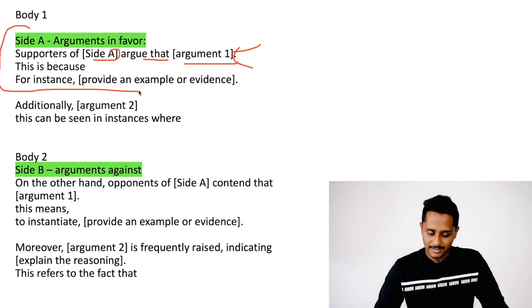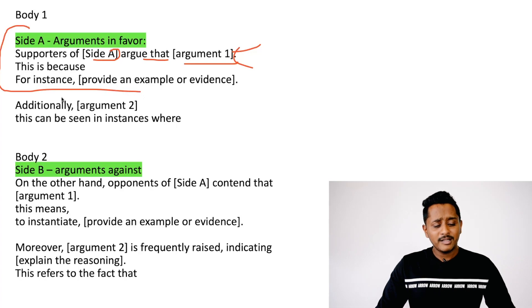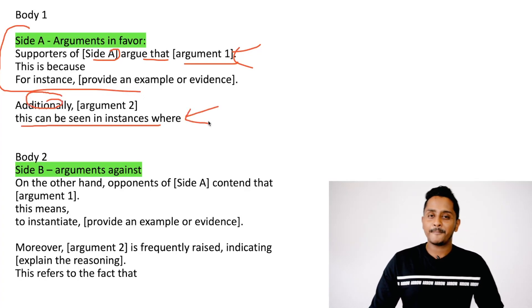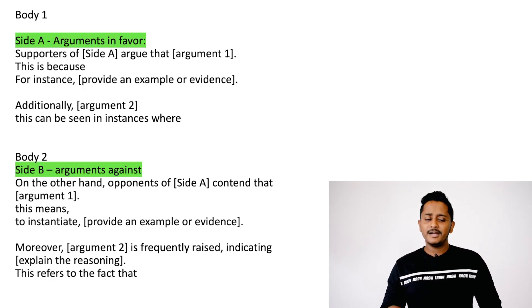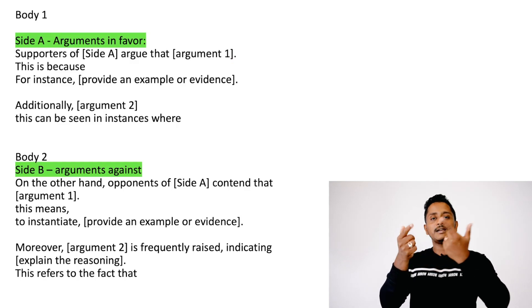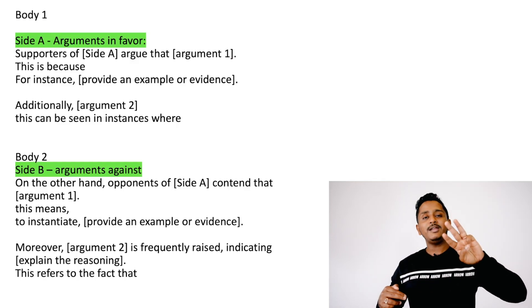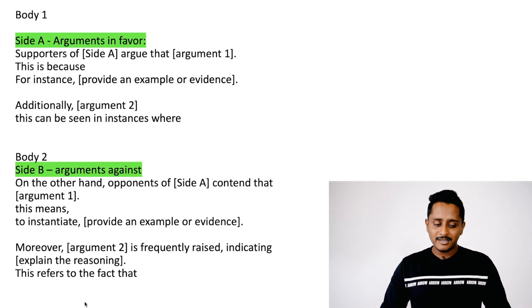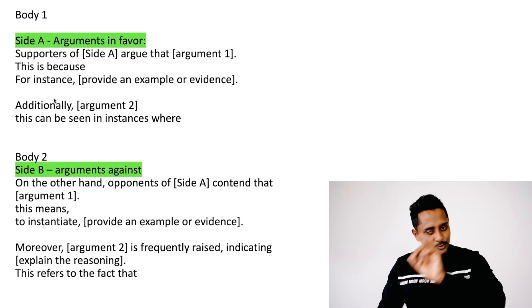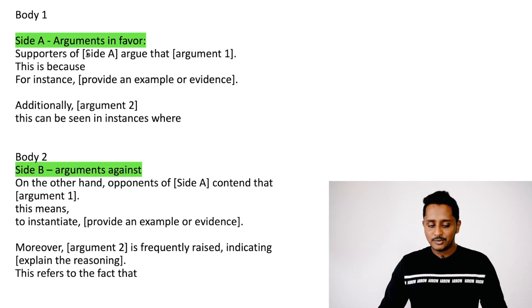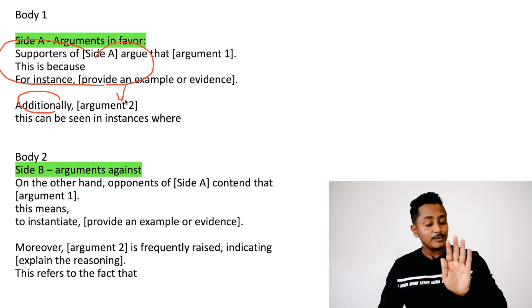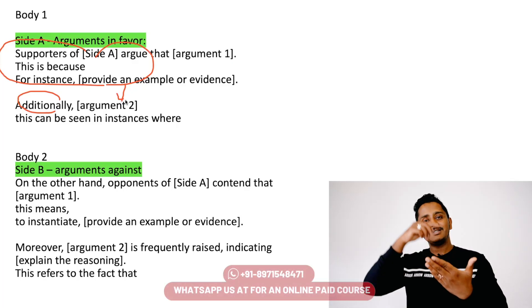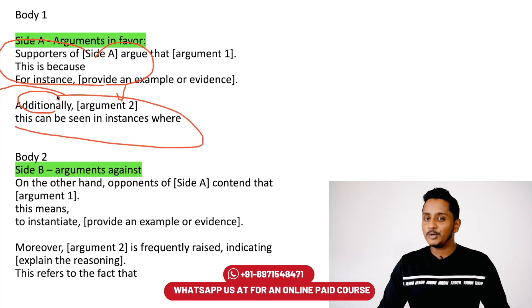An ideal body paragraph one would be: main idea, supporting idea with 'this is because,' and example with 'for instance' — three to five sentences. If you have one more idea, write 'Additionally...' and add a second idea with an example: 'This can be seen in instances where...' That itself becomes four to five sentences. Pay attention — supporting ideas are what actually give you the marks.